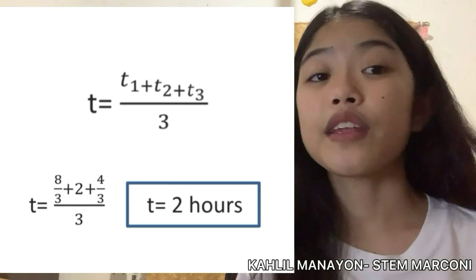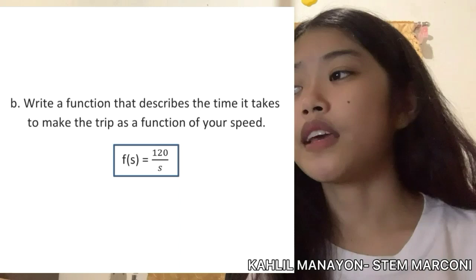We substitute: t equals 8 over 3 plus 2 plus 4 over 3, all over 3, and the final answer is 2 hours. For question b, we write a function that describes the time it takes to make the trip as a function of speed. The function derived is f of s equals 120 over s.